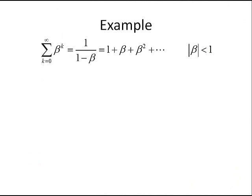So here's a numerical example of applying this formula. In this example, we use beta equal to 0.8, which satisfies the constraint of being less than 1. So the infinite summation results in a value using this closed form formula of being equal to 5.